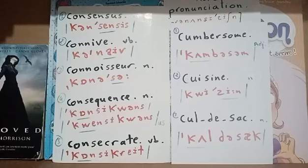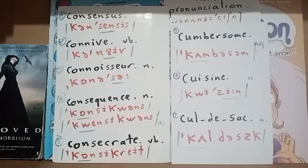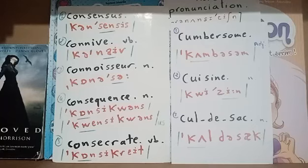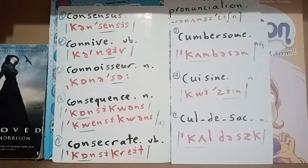I repeat the five words of the first list: consensus, connive, connoisseur, consequence or consequence, and consecrate. Now the second list. The first word is cumbersome. It's an adjective containing three syllables. Cumbersome means too complicated or too complex. The stress is on the first syllable, 'cumb.' We say cumbersome.